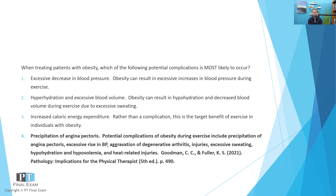Other complications would include excessive rises in blood pressure — that would be like an excessive sympathetic nervous system response — aggravation of degenerative type arthritis, injuries, and especially heat-related injuries, just because adipose tissue acts as a great insulator. So heat-related injuries would be high on the list, along with excessive sweating, hypohydration, and hypovolemia. All of these are likely potential complications to exercise or intervention with someone with obesity.